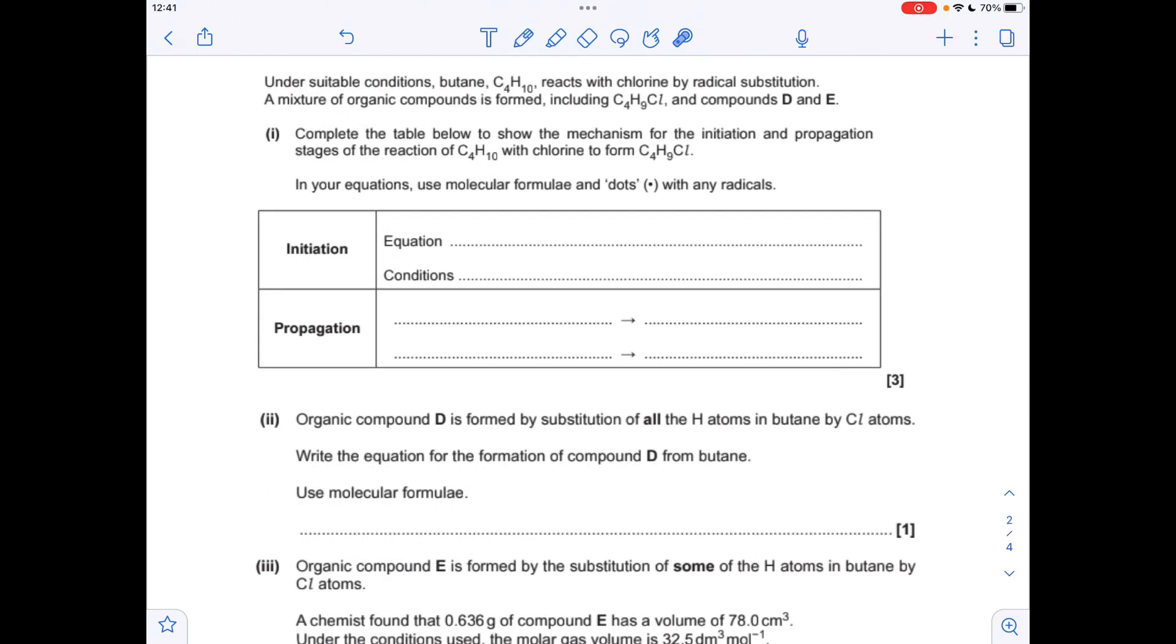Moving on to the first of the longer questions, and you can see it's asking us about the mechanism we've just talked about. So the initiation reaction equation looks like that, so chlorine is broken by the UV, which is a condition. So Cl2 is broken by the UV into two chlorine radicals.